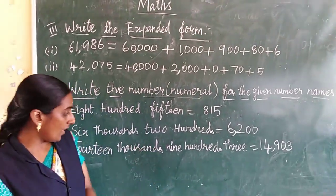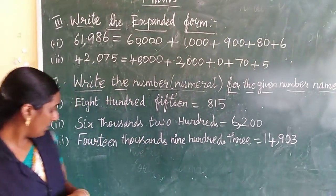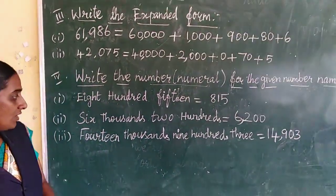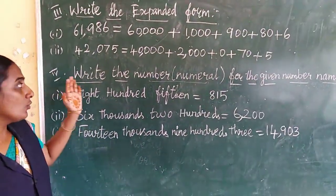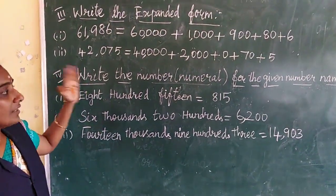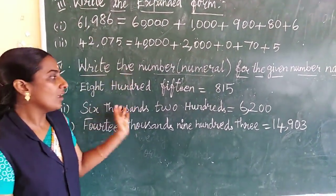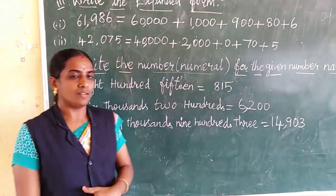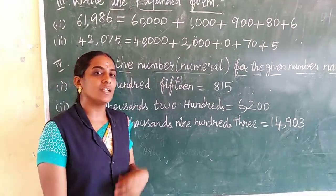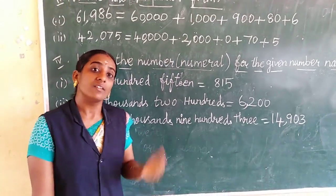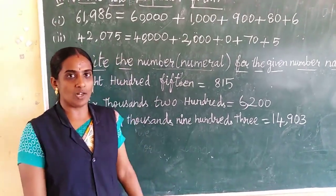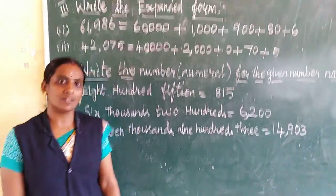Today we have seen how to write the number and expanded form. Let's see in the next class — 6 digit place value. Thanks students, see you next class.